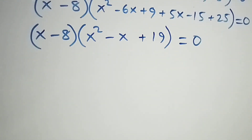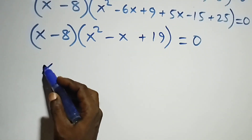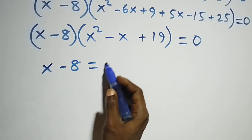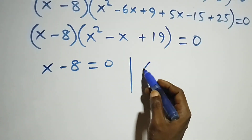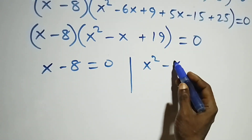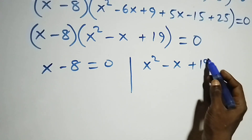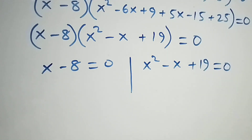That is, (x minus 8) into brackets, times x squared minus x plus 19, equals zero — giving two possible cases: x minus 8 equals 0, or x squared minus x plus 19 equals 0.